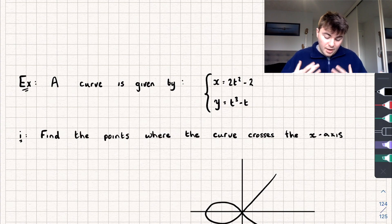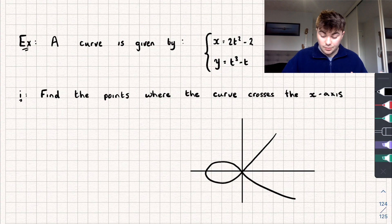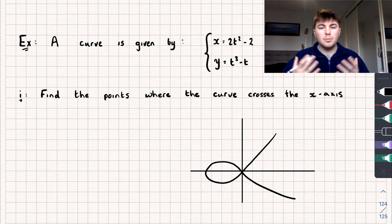Let's now take a look at another question here where we have a curve given by the following parametric equations. I've drawn a sketch of the curve down here, and we need to find the points where the curve crosses the x-axis.